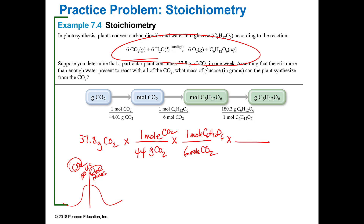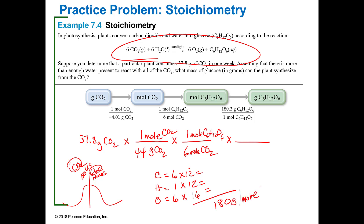To find the mass of glucose, calculate the molar mass: C is 6 times 12, H is 12 times 1, O is 6 times 16 — that comes out to 180 grams per mole. So multiply by 180 grams of glucose per mole. Everything cancels and that gives grams of glucose. The answer is 25.8 grams of glucose. Make sure you can put this into your calculator and get the correct answer.